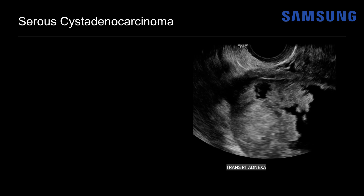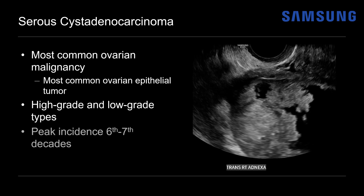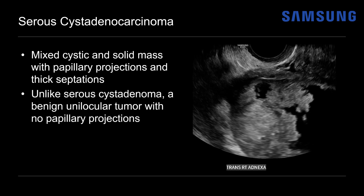At surgery this turned out to be a serous cystadenocarcinoma — the most common ovarian malignancy and the most common ovarian epithelial tumor. It is divided into high-grade and low-grade types, with peak incidence between the sixth and seventh decades of life. On ultrasound these tumors tend to appear as a mixed cystic and solid mass with papillary projections, and there may also be thick septations. This is different from a serous cystadenoma, which is a benign unilocular tumor that should have no papillary projections. These patients often have an elevated CA-125, seen in greater than 90% of patients, which can be a helpful adjunct.